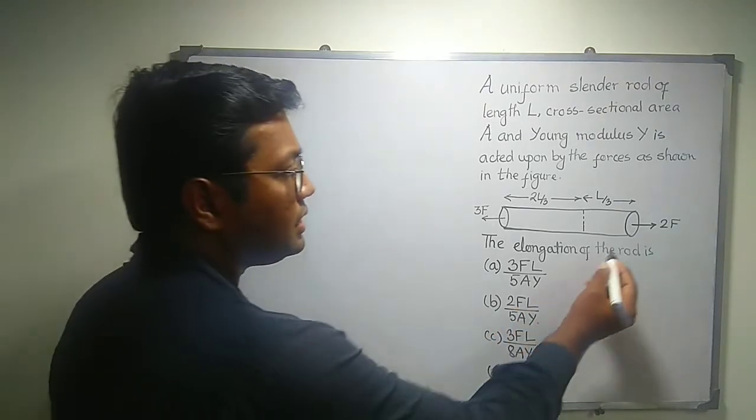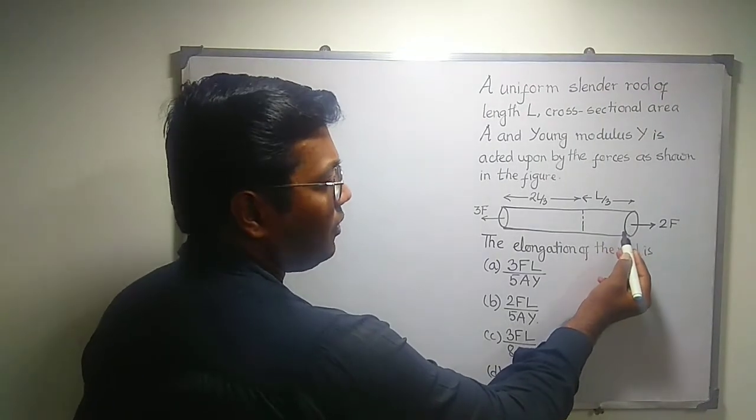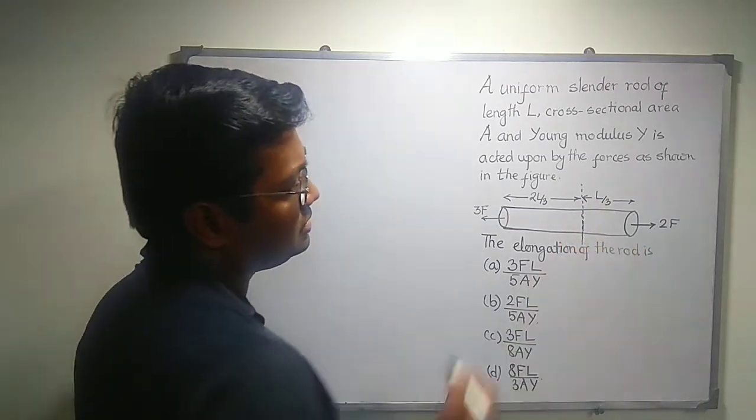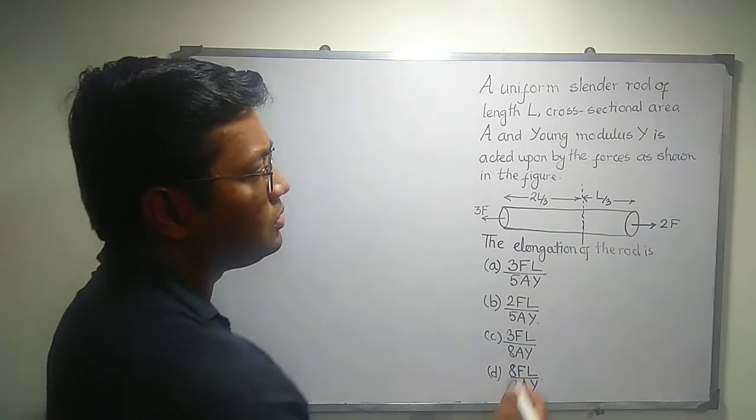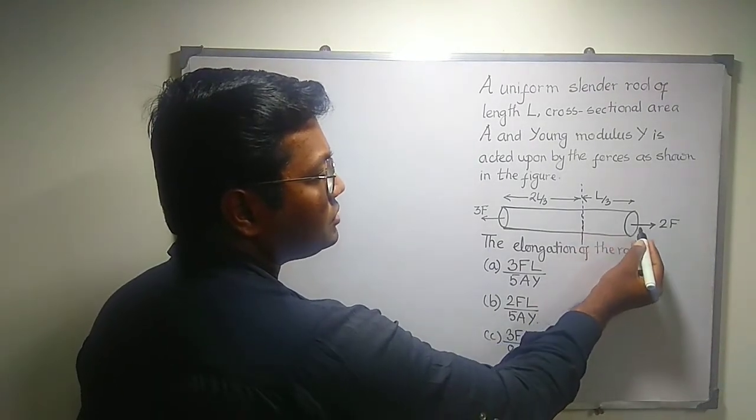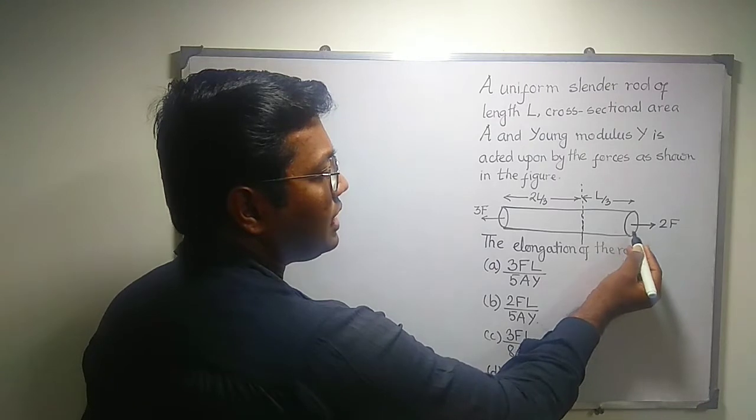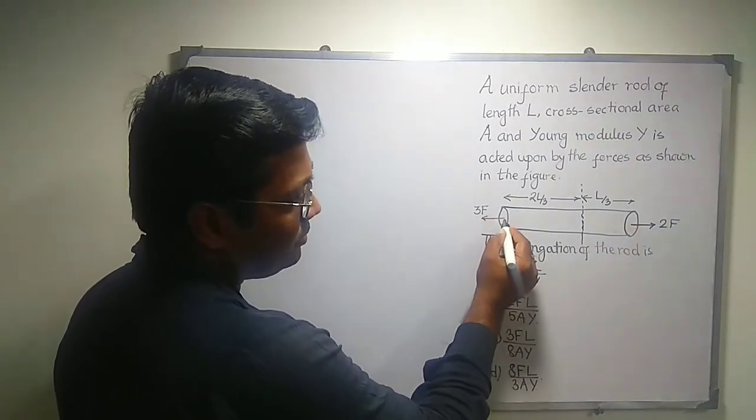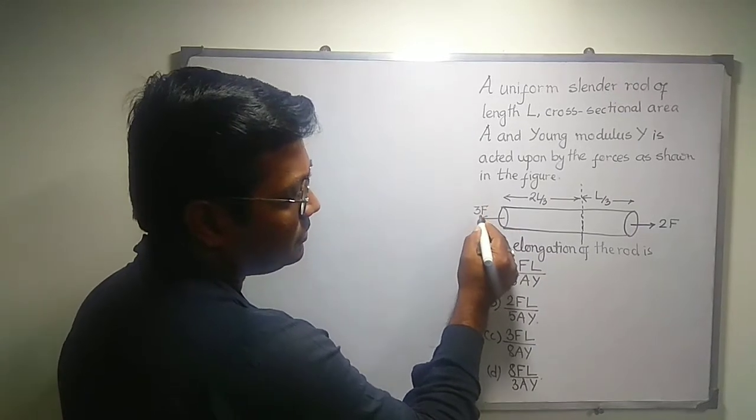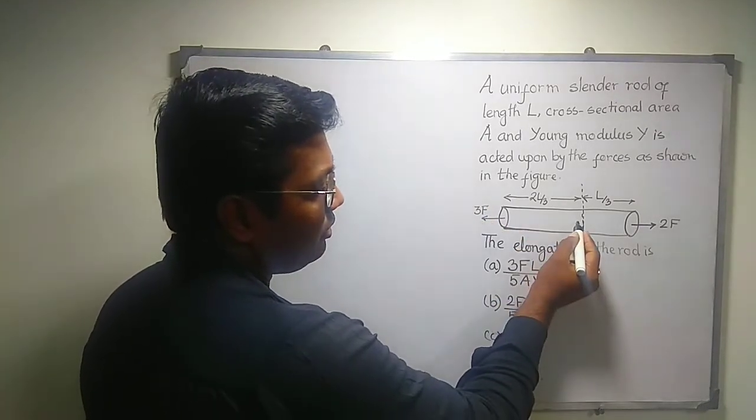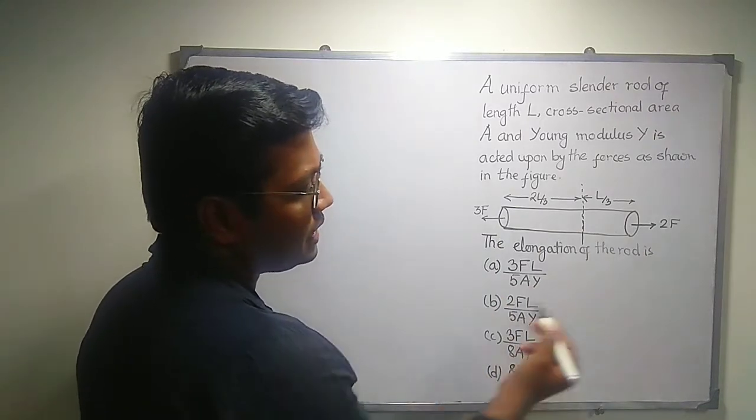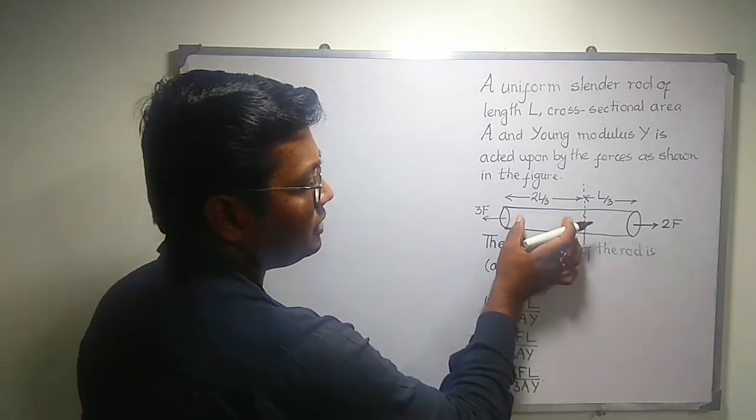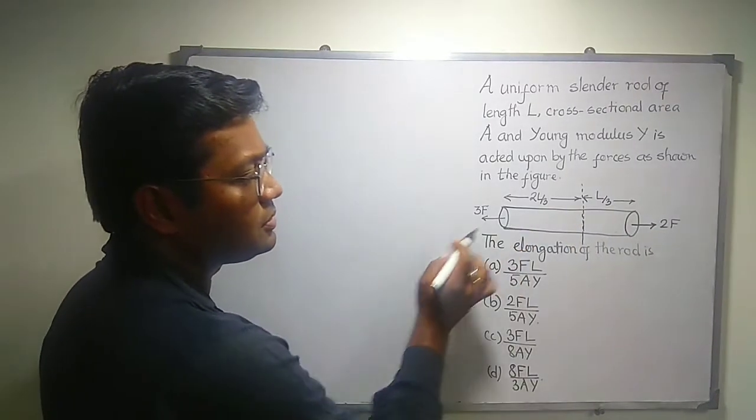So somehow it is said these 2F forces acted from left to right and we can consider it is a division something like that. So up to a length L by 3 this 2F force is acting and that's why it may elongate it. And on this end from right to left this 3F force is acting. And on this length 2L by 3. So you can say for the length L by 3 this 2F force is acting, and for the length 2L by 3 this 3F force is acting.